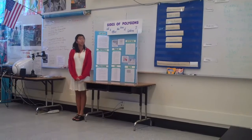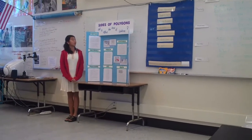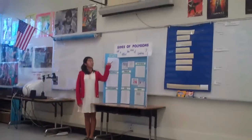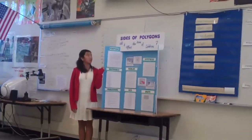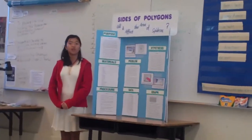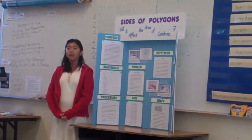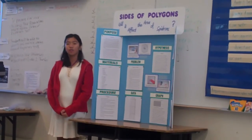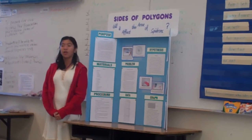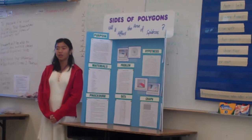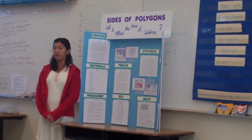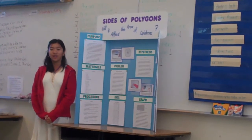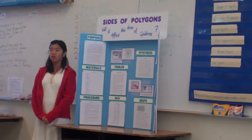My project title is: will the size of polygons affect the area of spedrons? And my question is, as the amount of sides in a regular polygon increases, how does it affect the area of one semi-spedron?